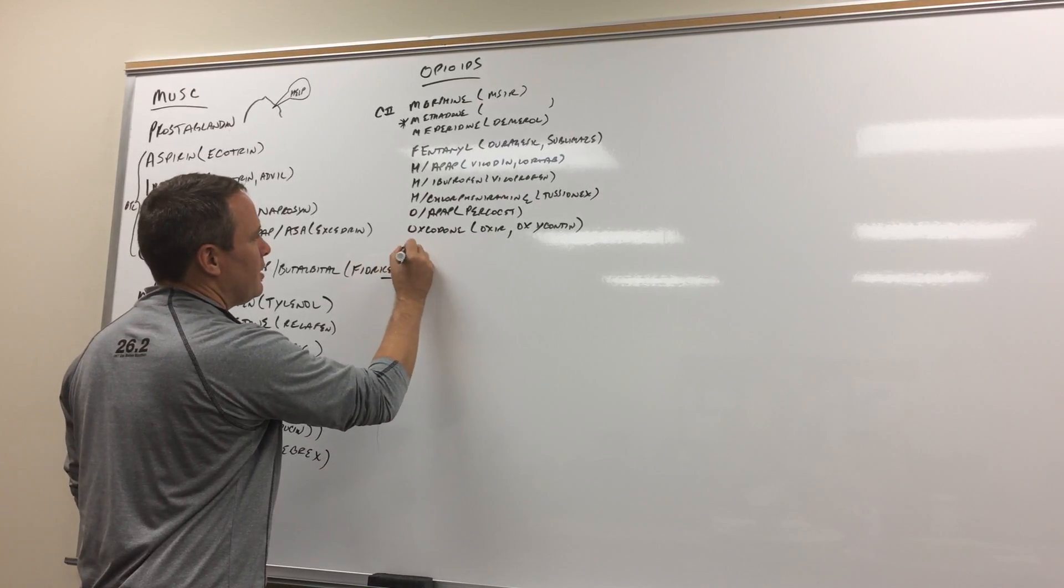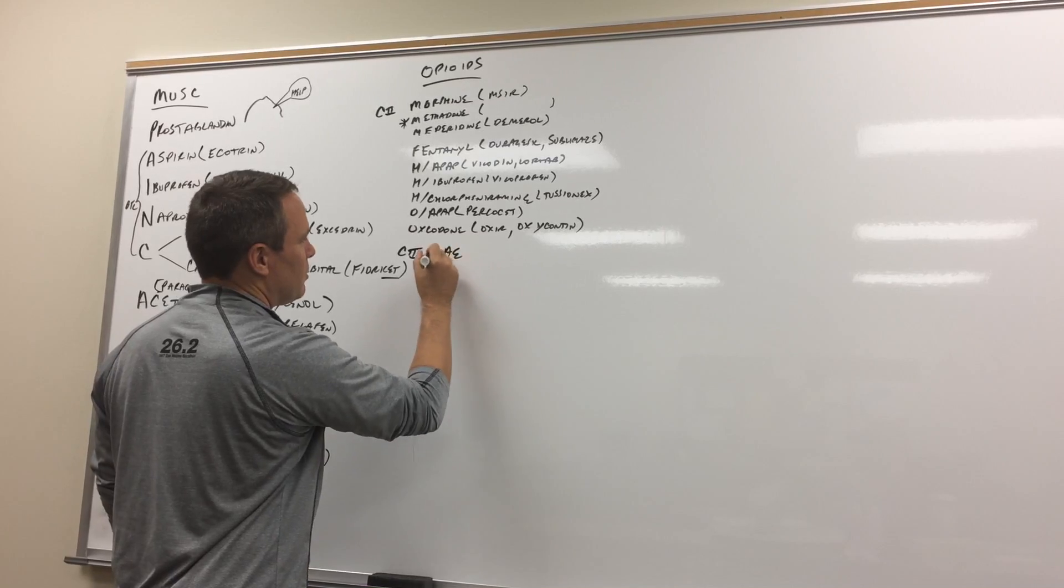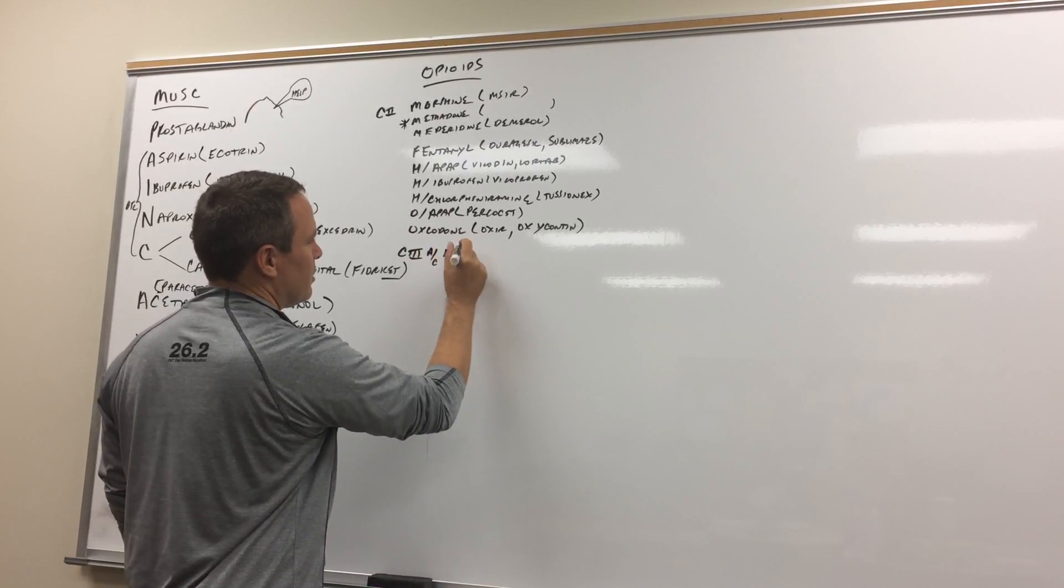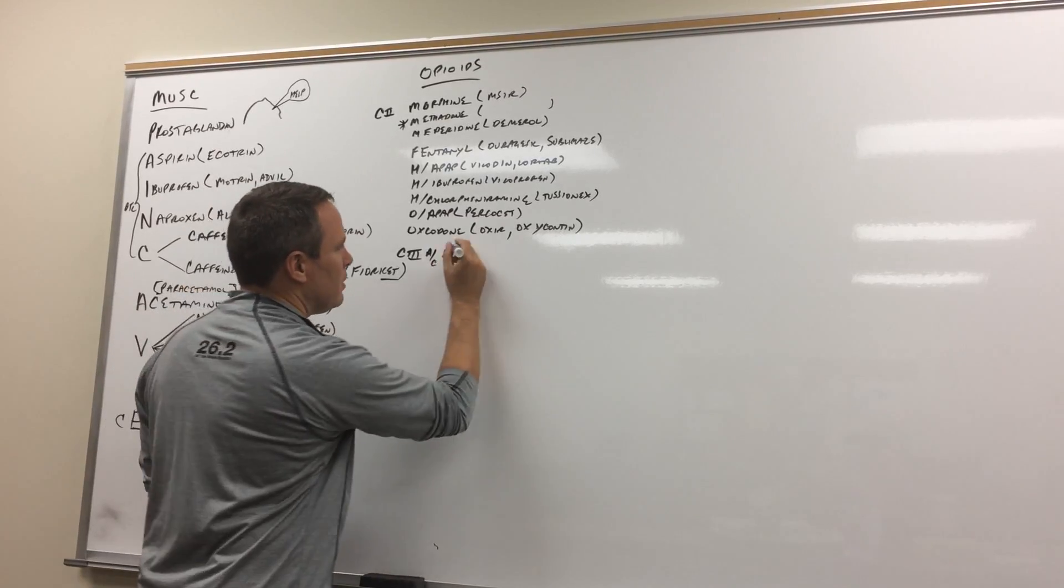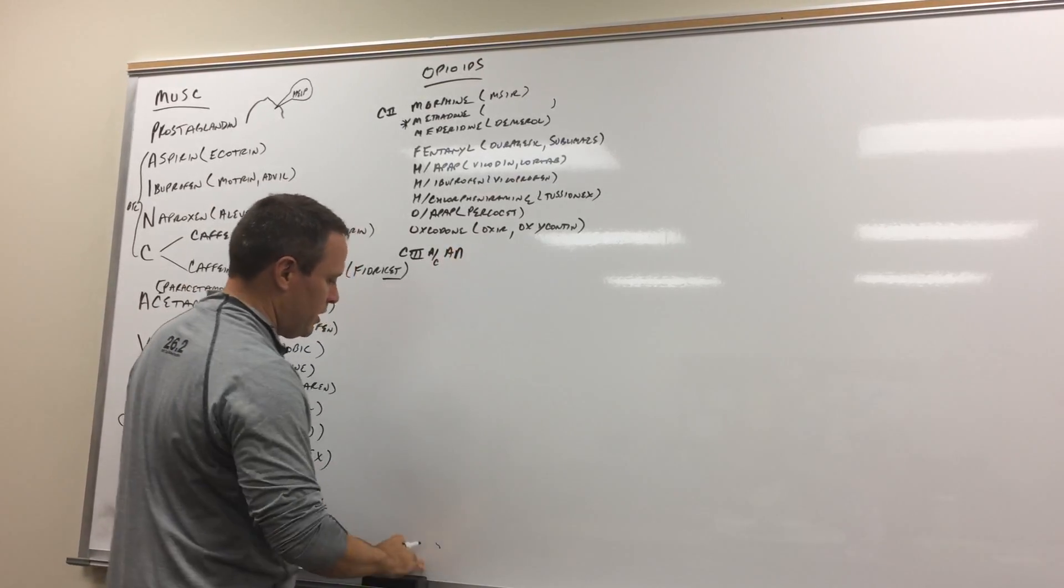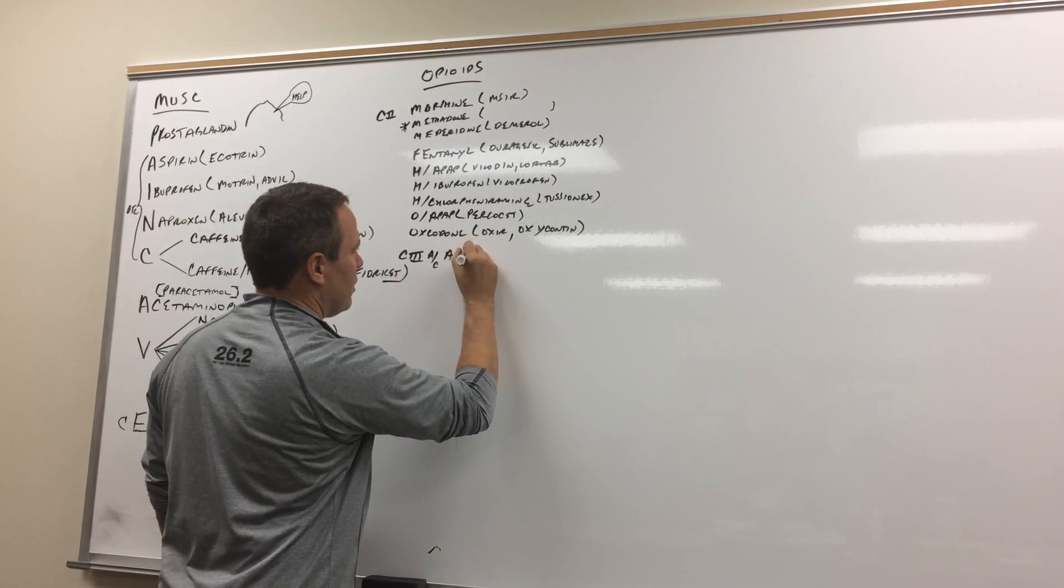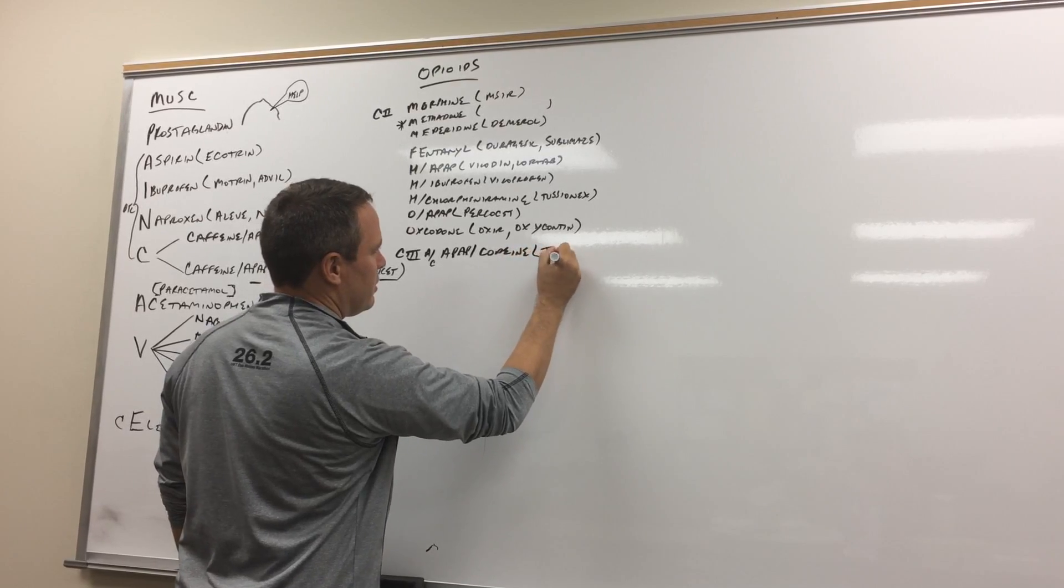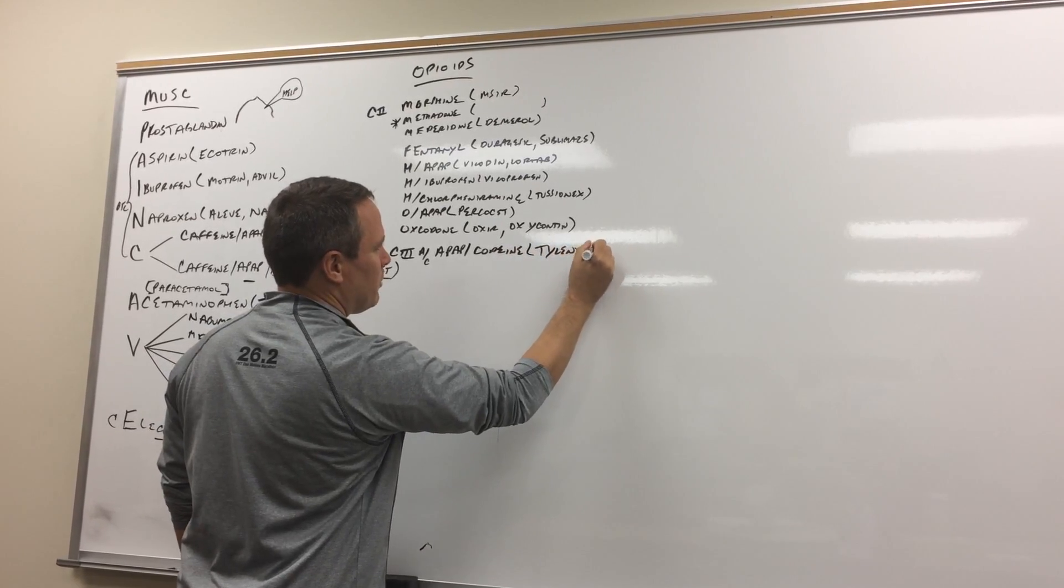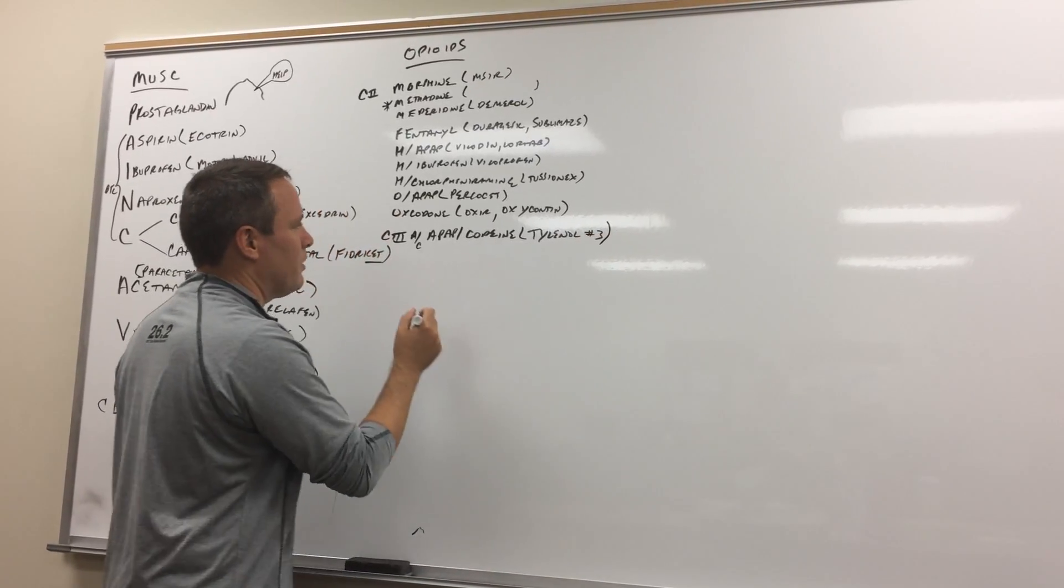C3 I think of air conditioning so acetaminophen so AC. So we'll do APAP to make it easier. APAP with codeine and that's Tylenol. You've probably heard of Tylenol 3 but there's a number 2 and number 4 and they have to do with number of grains.